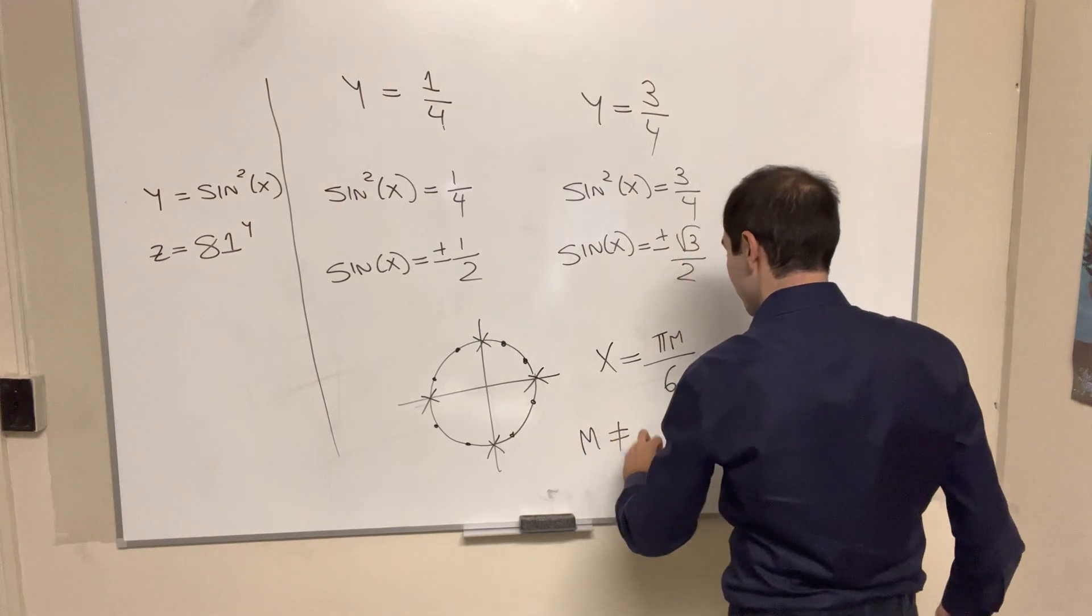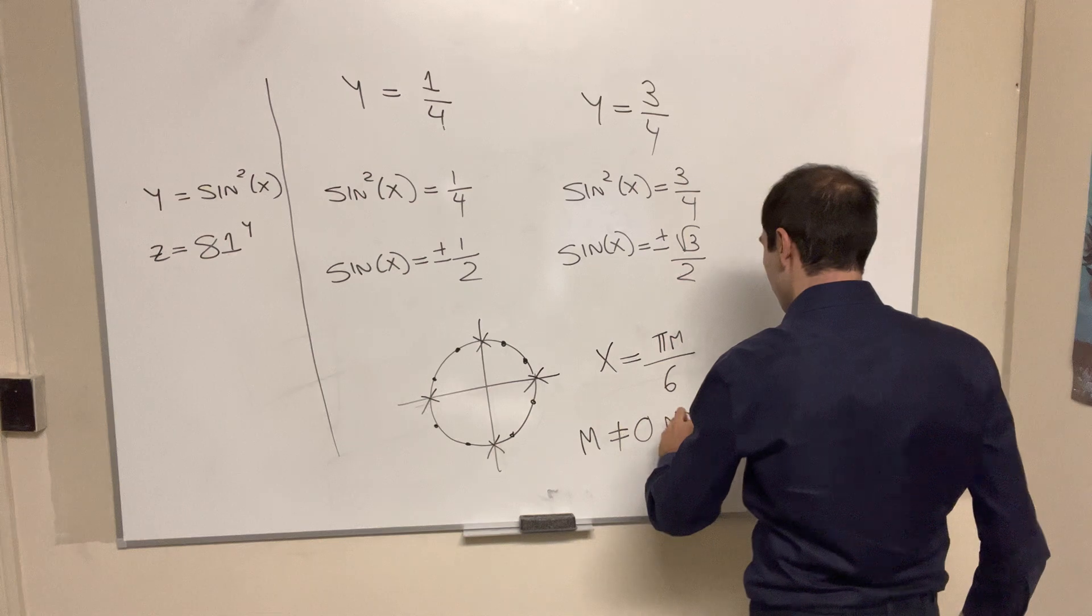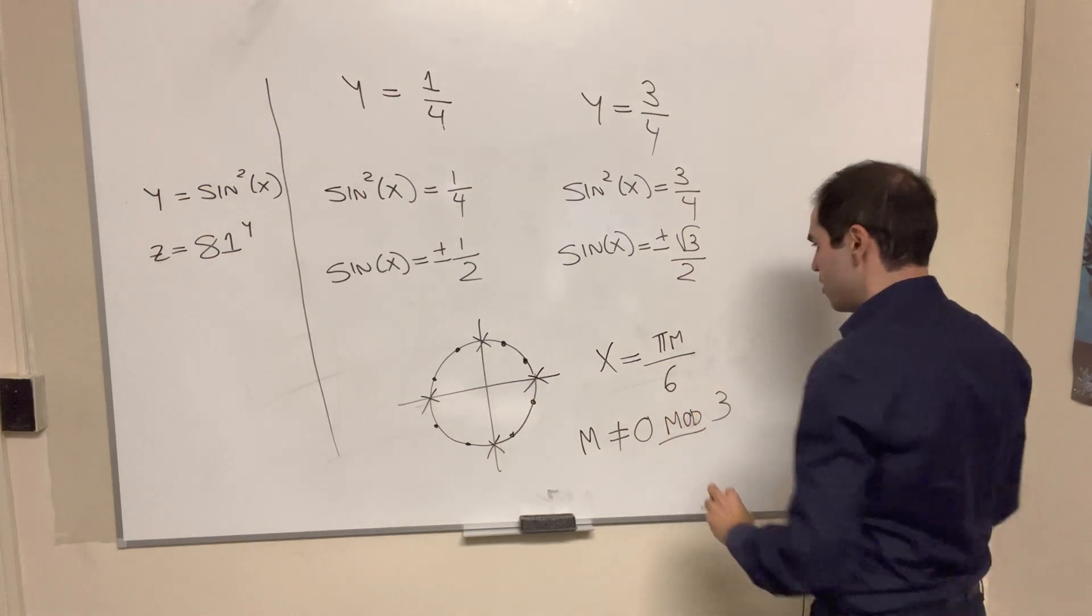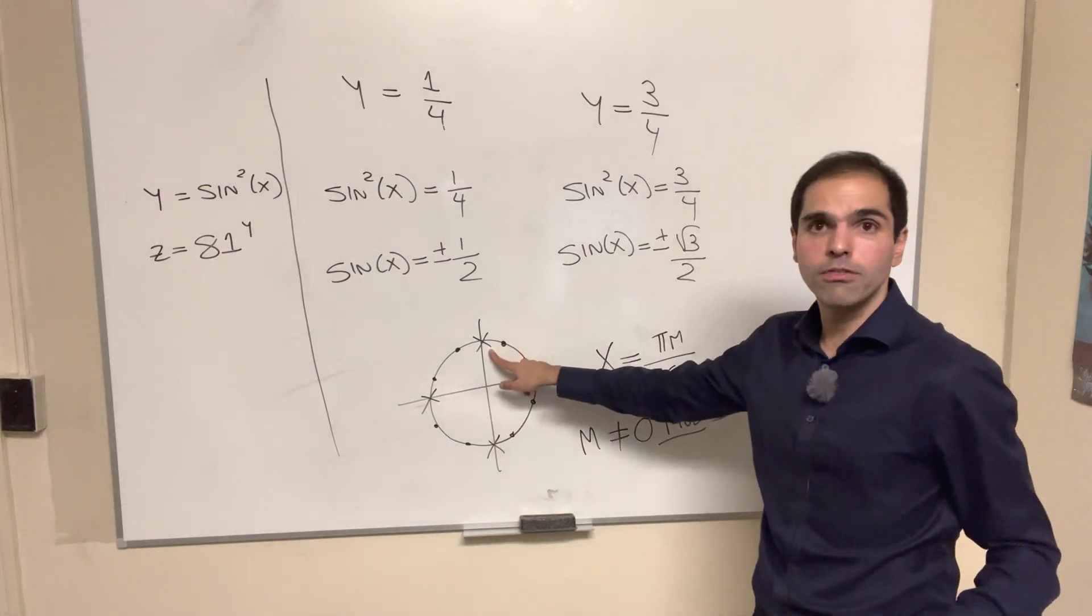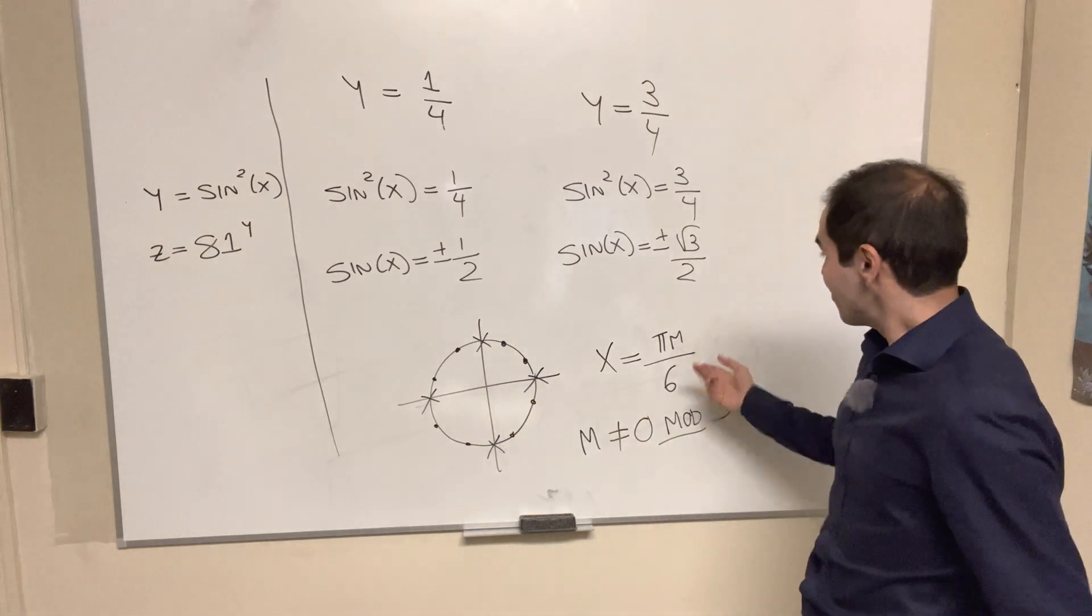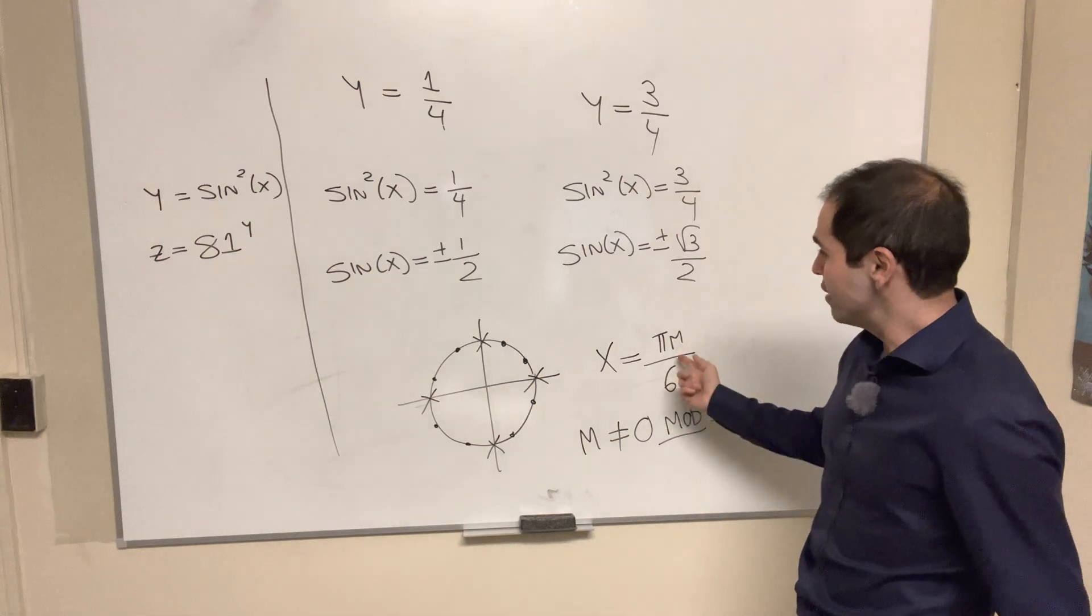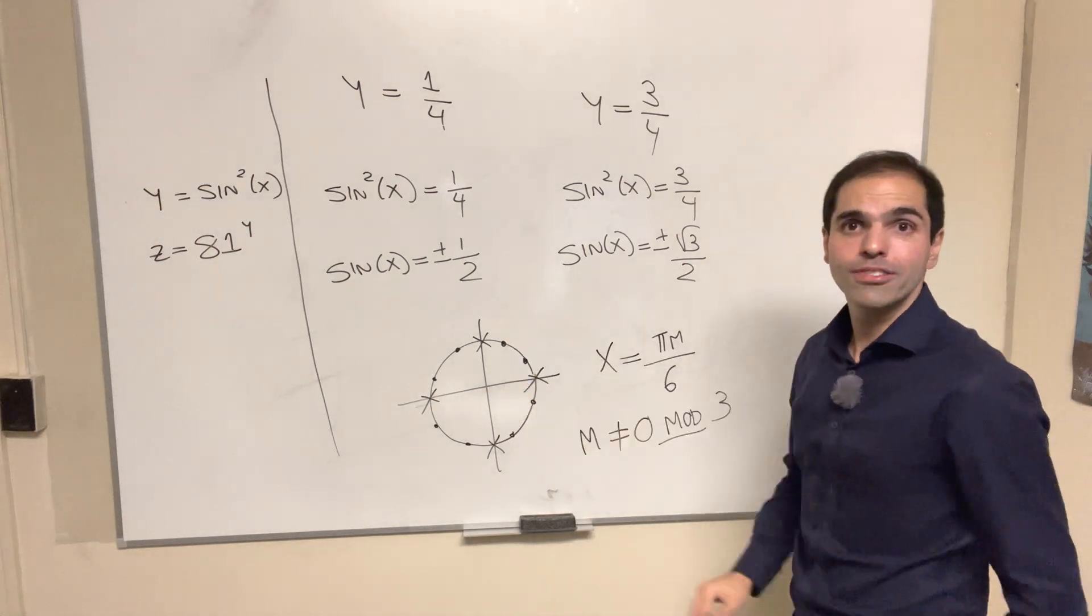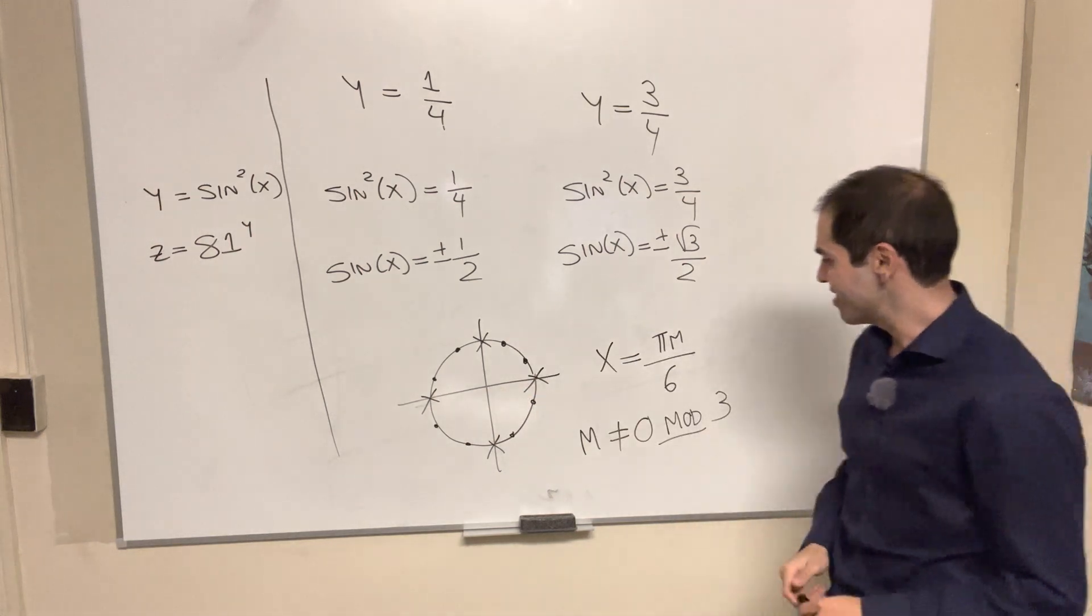except m cannot be a multiple of 3. So m is not equal to 0 mod 3, because multiples of 3, that would give you pi over 2, pi, 3 pi over 2, and 2 pi. And in fact, I believe, yeah, there should be 8 of them between 0 and 2 pi, just like here.